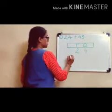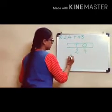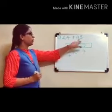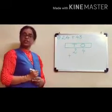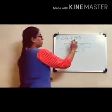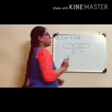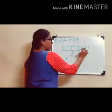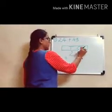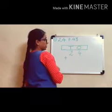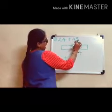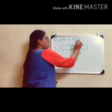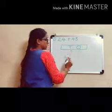Put this plus sign. And we will do the same with the number 43. 43 is equal to 3 ones and 4 tens. So we write the number 3 in the column of 1s.